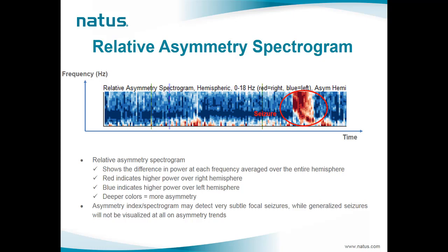The asymmetry index and asymmetry spectrogram may detect very subtle focal seizures not seen on other trends, while generalized seizures will not be visualized at all on asymmetry trends.